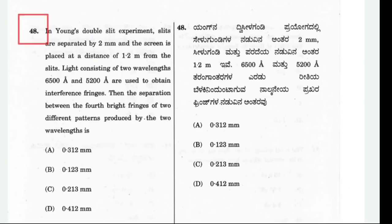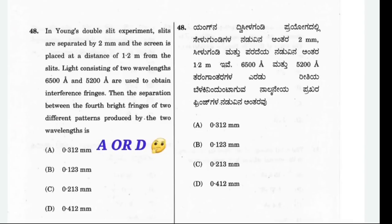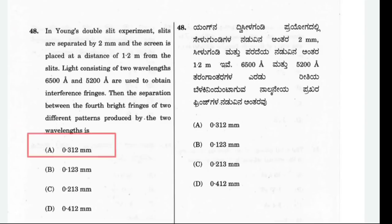In this question, the probability of the correct option being option A or option D — both are having a similar end. Now to decide the correct answer, we take the help of other options. The number 3 is repeated more in many options, and so this supports option A. Therefore our correct answer will be option A.